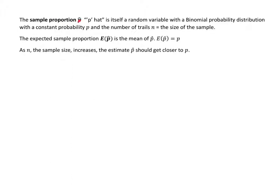The sample proportion p hat is itself a random variable with a binomial probability distribution with a constant probability p and the number of trials, not trails, n, the size of the sample.